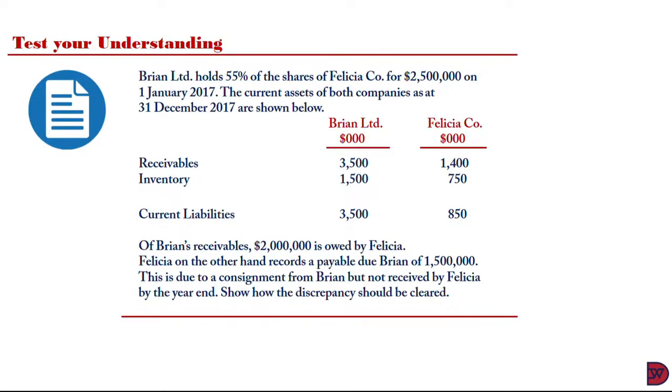Let's test our understanding. Brian Limited holds 55% of the shares of Felicia for $2.5 million on 3rd January 2017. The current assets of both companies as at 31st December 2017 are shown below. Of Brian's receivables, $2 million is owed by Felicia. Felicia on the other hand records a payable due Brian of $1.5 million. This is due to a consignment from Brian but not received by Felicia by the year end. Show how this discrepancy should be cleared.